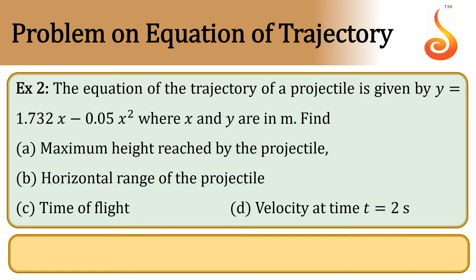Problem on equation of trajectory. Example 2. The equation of the trajectory of a projectile is given by y = 1.732x − 0.05x², where x and y are in meters. Find the maximum height reached by the projectile, the horizontal range of the projectile, the time of flight, and the velocity at 2 seconds.